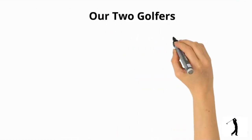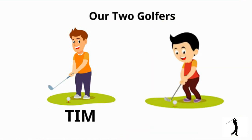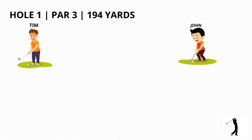So to explain it further, let's put our two golfers, Tim and John, to play on this par 72 golf course. Our first hole is a par 3, that's 194 yards long. Tim takes three strokes to hole the ball while John takes four. The hole being a par 3, we could say that Tim has made a par, while John has taken one additional stroke on a par 3 hole. So we would say John has made a bogey.